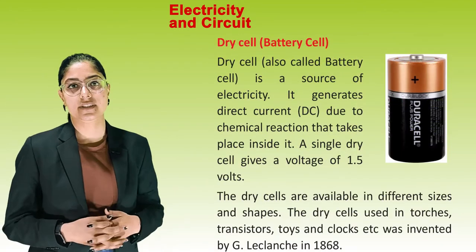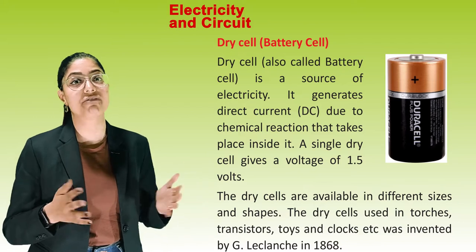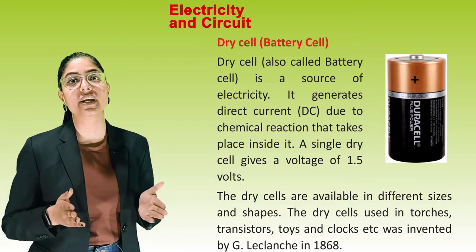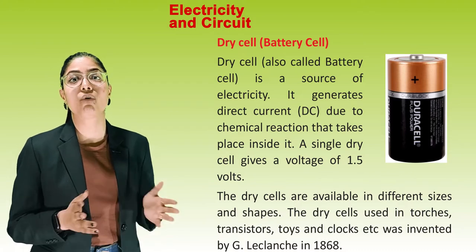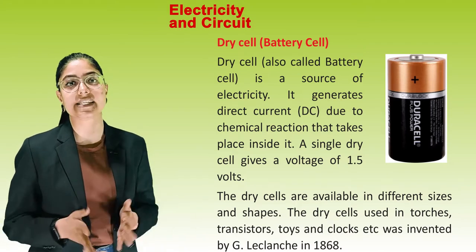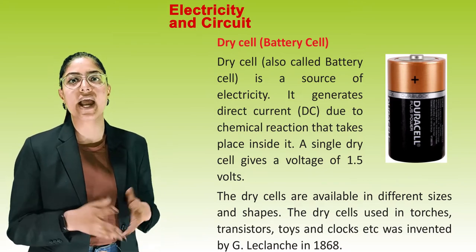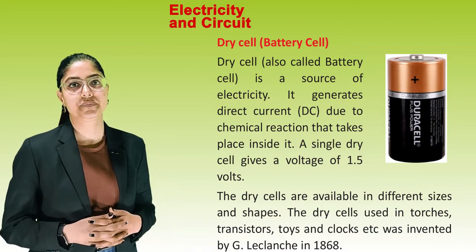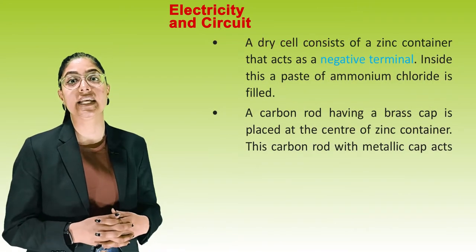Next is the dry cell, also called battery cell — it is a source of electricity. It generates direct current (DC) due to chemical reactions that take place inside it. A single dry cell gives a voltage of 1.5 volts. Dry cells are available in different sizes and shapes and are used in torches, transistors, toys, clocks, etc. The dry cell was invented by G. Leclanche in 1868. It consists of a zinc container that acts as a negative terminal, and inside it, a paste of ammonium chloride is filled.